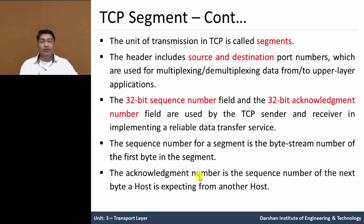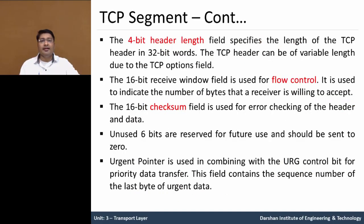The acknowledgement number is the sequence number of the next byte the host is expecting from another host. The 4-bit header length field specifies the length of the TCP header in 32-bit words, storing the total length of the TCP header.